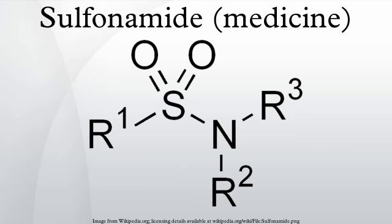Prontosil, as Bayer named the new drug, was the first medicine ever discovered that could effectively treat a range of bacterial infections inside the body. It had a strong protective action against infections caused by streptococci, including blood infections, childbed fever, and erysipelas, and a lesser effect on infections caused by other cocci. However, it had no effect at all in the test tube, exerting its antibacterial action only in live animals.